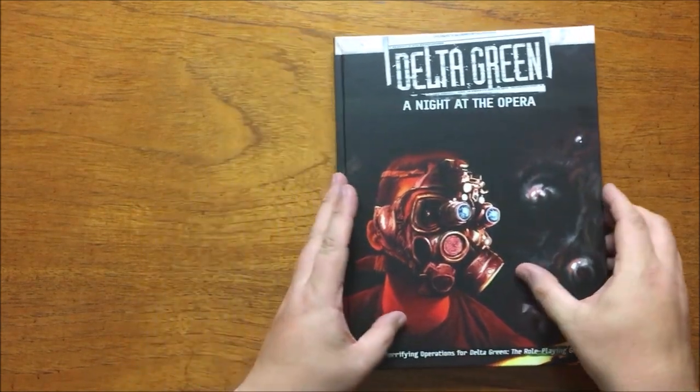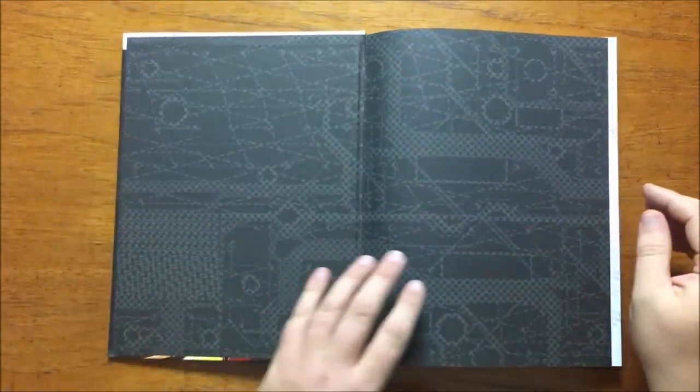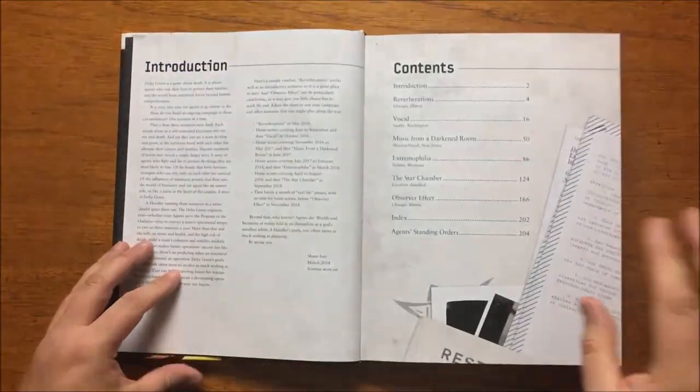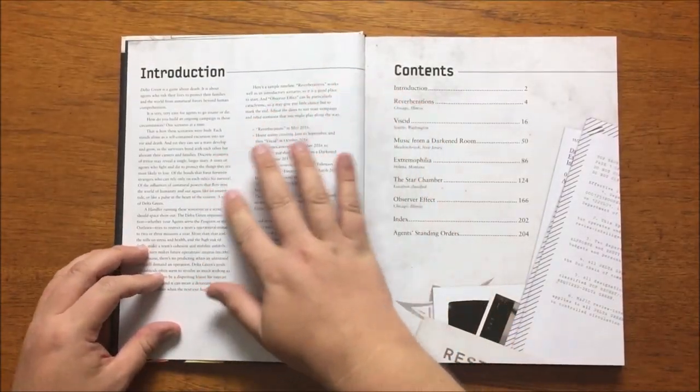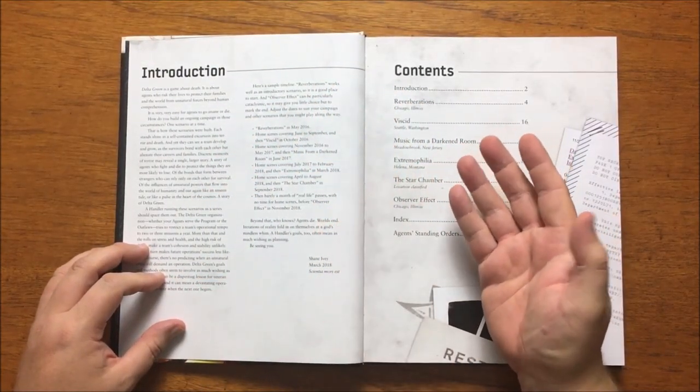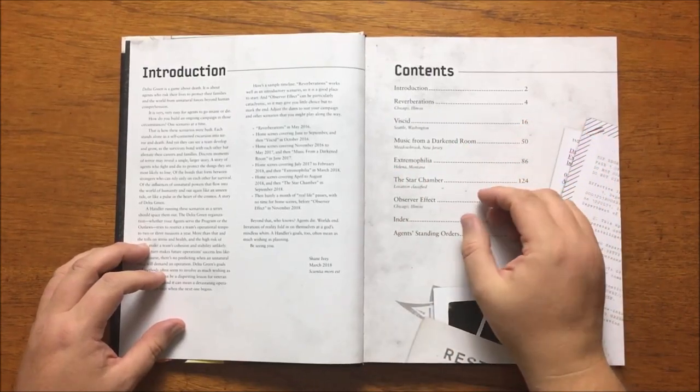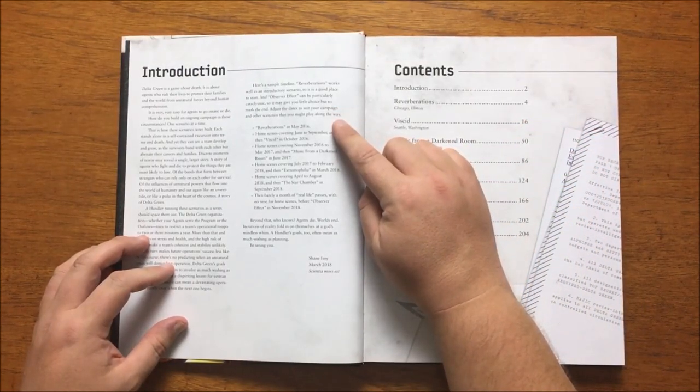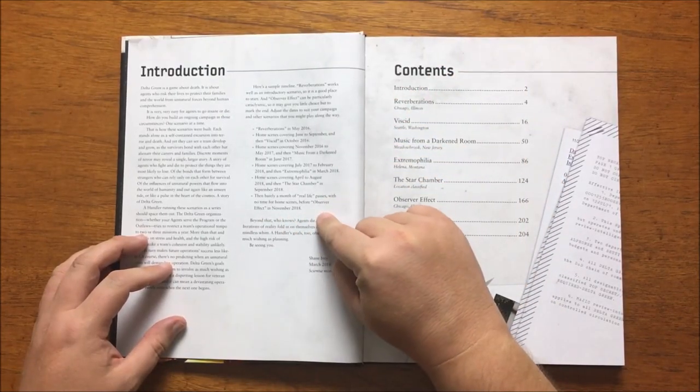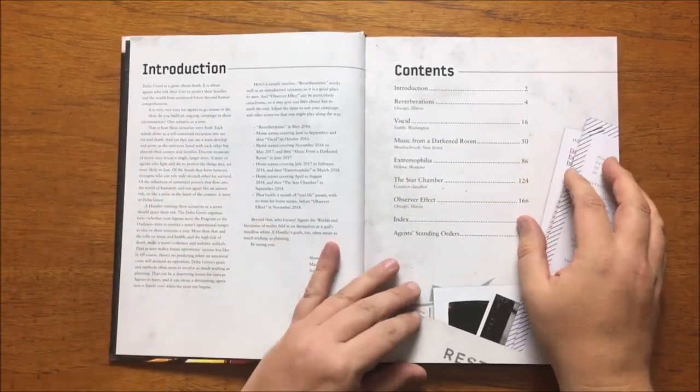On to the inside. First up we have an introduction by Shane Ivey where he talks about the points of Delta Green and what the player should expect, as well as giving some handy information on how to approach running these scenarios as a series including rough dates as to when they could be set. He recommends beginning with Reverberations being set in May 2016 and finishing with Observer Effect in November 2018 as it is particularly cataclysmic.